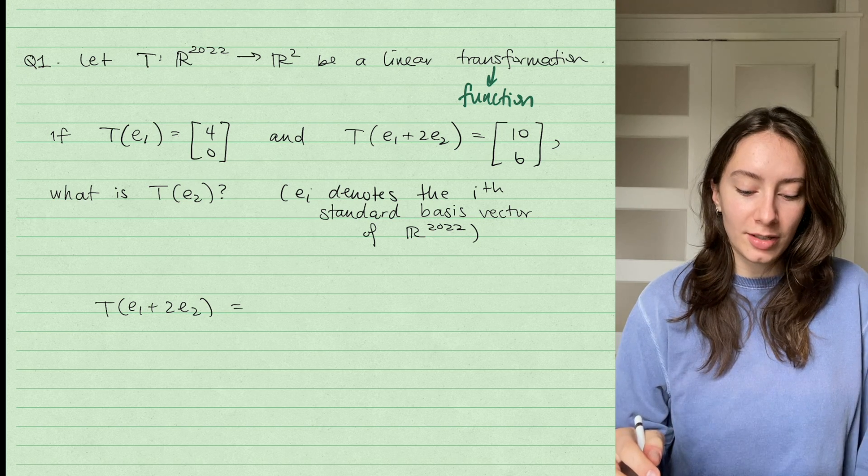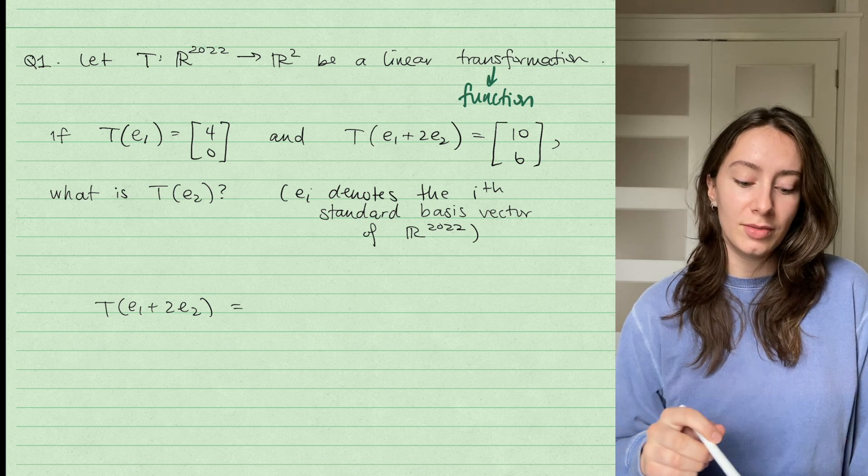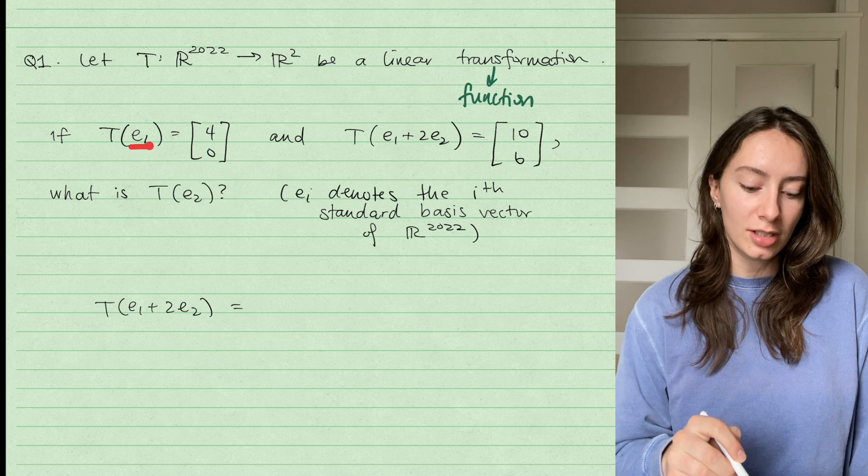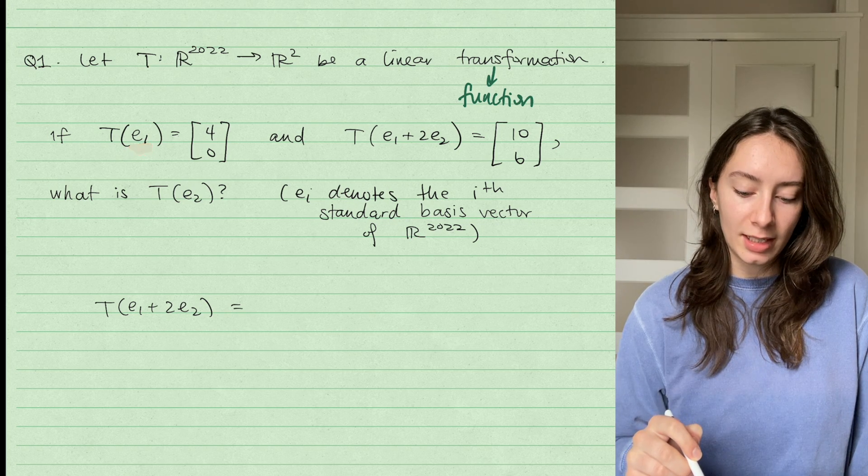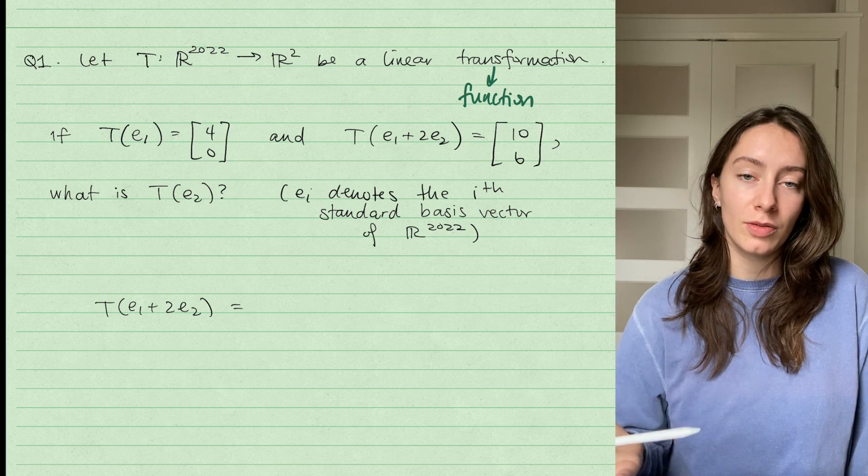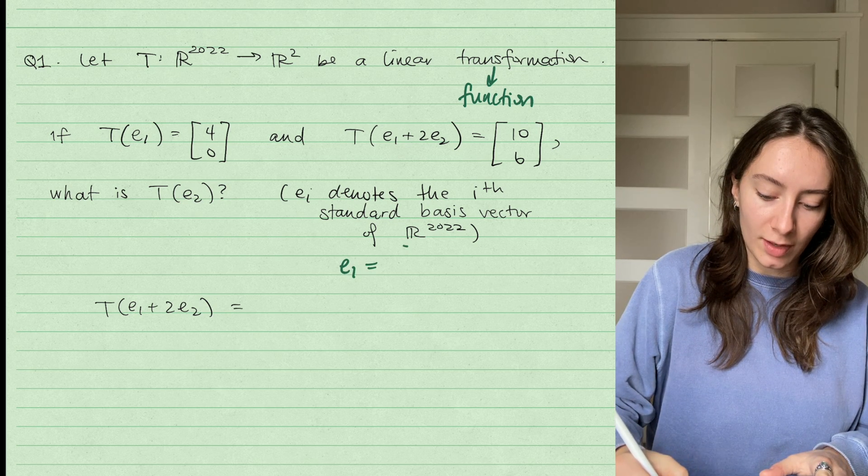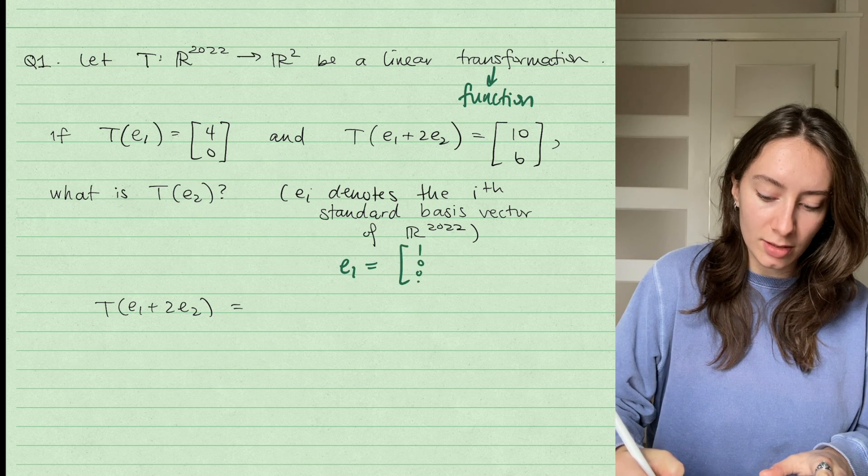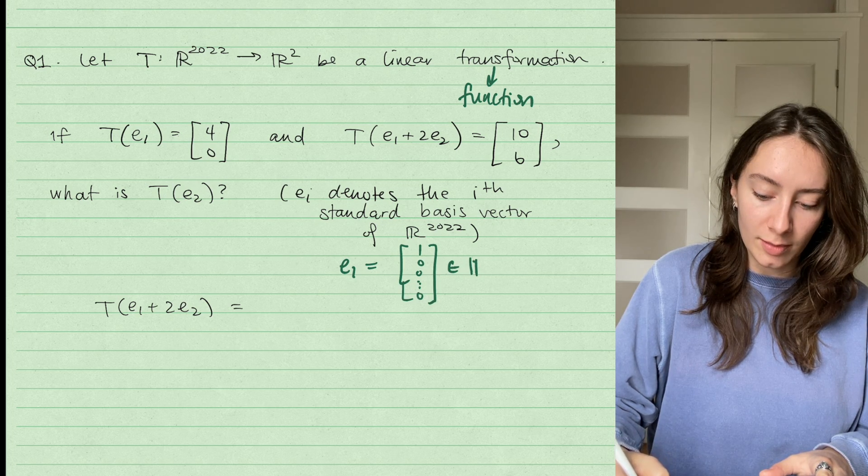So we've got some linear transformation and we know the following information. We know that the transformation, if it's given the input E_1, and E_1 is just the first standard basis vector of R^2022, so it's just the vector one with zeros everywhere else all the way down, it's a 2022 dimensional vector.